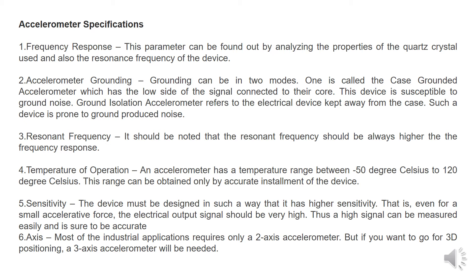Next one is temperature of operation. An accelerometer has a temperature range between 50 degree Celsius to 120 degree Celsius. This range can be obtained only by accurate installment of the device.